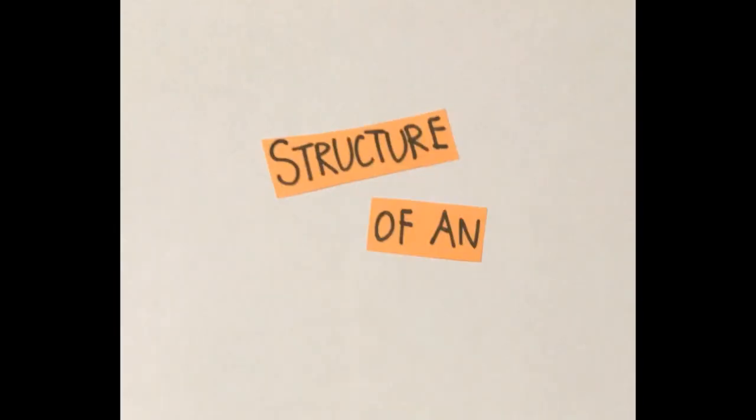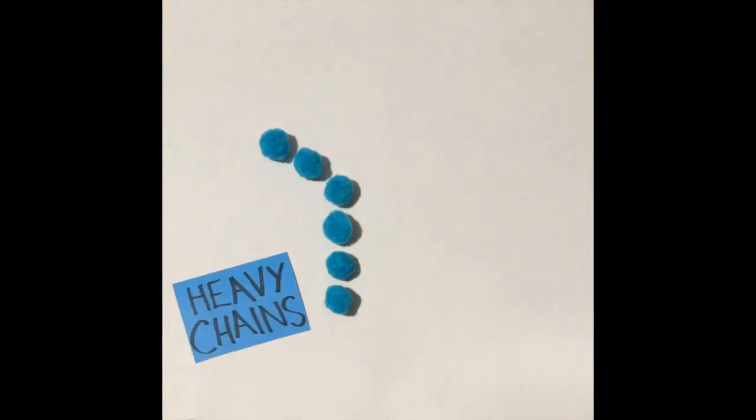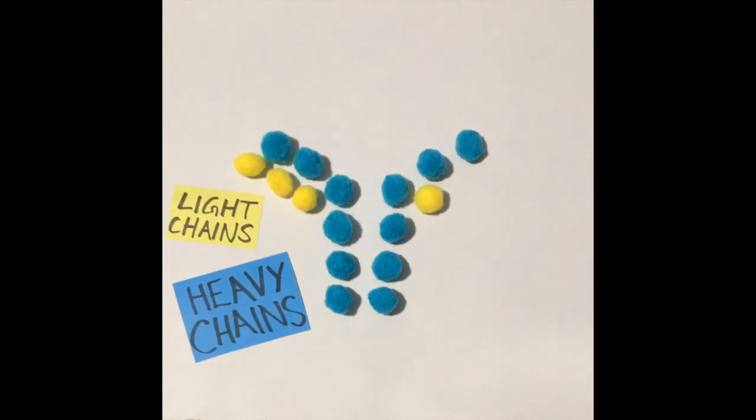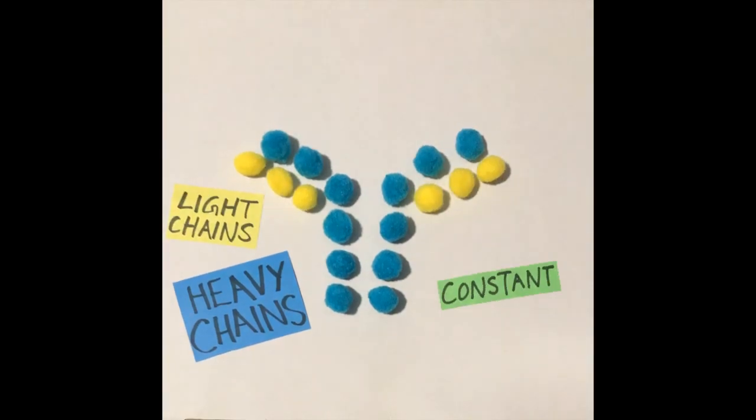To start, let's look at the structure of an antibody. Antibodies are made of two identical protein chains called heavy chains and two identical protein chains called light chains. The bottom region of the antibody is unchanged across all antibodies. It's the top that's variable.